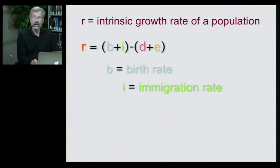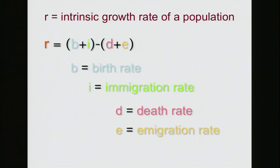R is calculated from four different parameters of demography. Birth rates and immigration are given as B and I. Death rate and emigration are given as D and E. Birth and immigration add individuals to a population, while death and emigration reduce the number of individuals in the population.